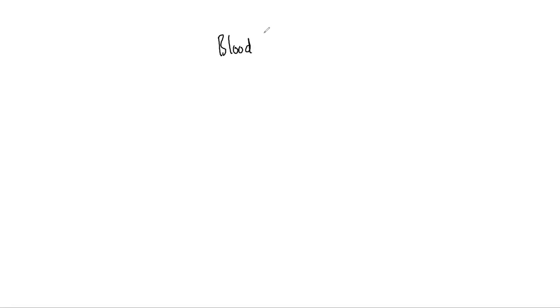Hello all, welcome back to the Virolog channel. In this video today, we're going to learn about how to figure out what blood type has to be donated to a person, or what type of blood can be received by a person in an emergency — that is, we are talking about blood transfusion. This will also give you an answer for why blood group AB is called a universal recipient and why blood group O is called a universal donor.